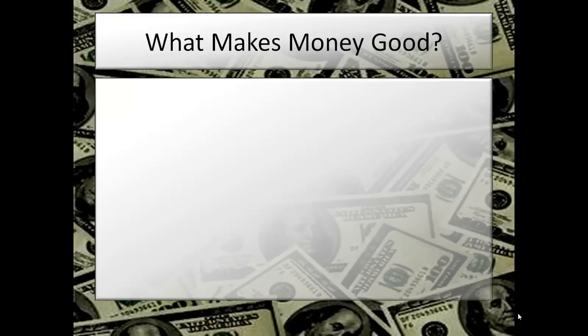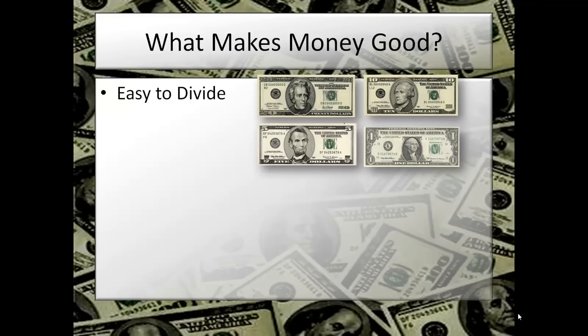What makes money good — what makes some type of currency a good tool? Well, it's easy to divide. Look at paper money: we have all these different denominations, different dollar values. If I have a $20 bill and something costs $2, it's easy — you give me a $10, a $5, and three $1s as change. How do you divide a cow?